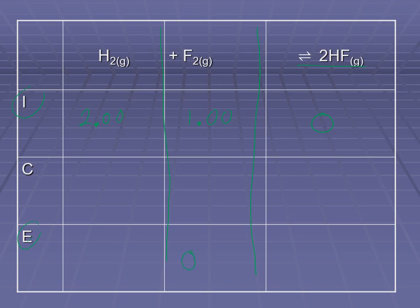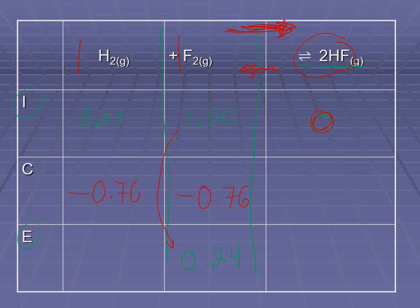Since there are no products initially, the reaction has to progress toward products — there's no way to go back and reform the reactants because there are no products yet. So we know we're going to have a shift to the right, forming some products. If fluorine is going down by 0.76, and this is a 1-to-1 mole ratio, then hydrogen must also be going down by 0.76. And with a 1-to-1-to-2 ratio, the hydrogen fluoride product is going up by twice the amount the reactants are going down.